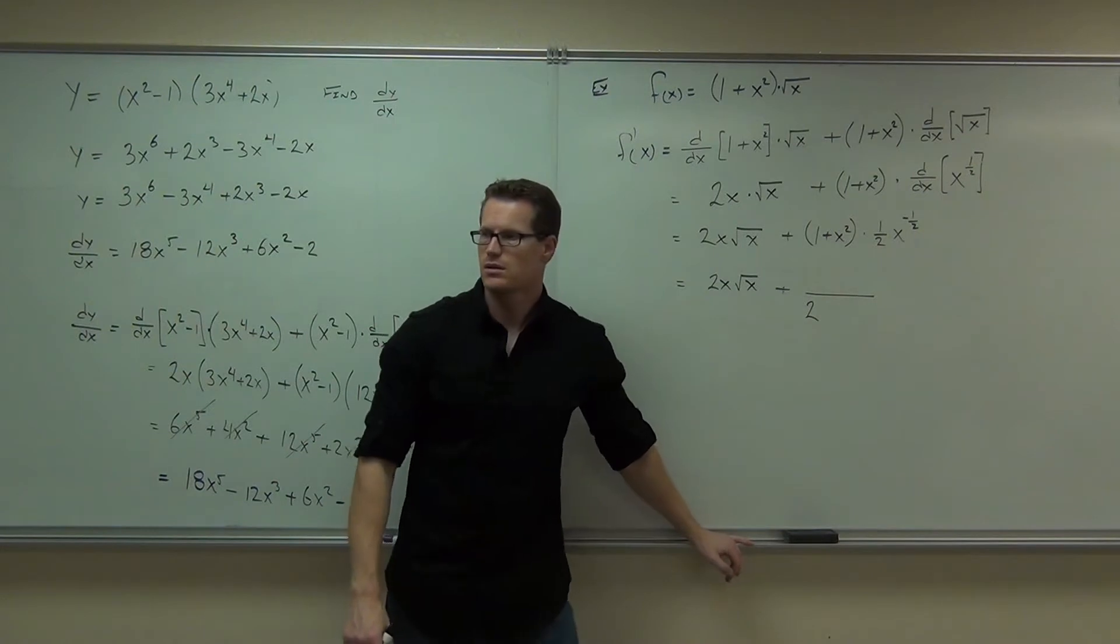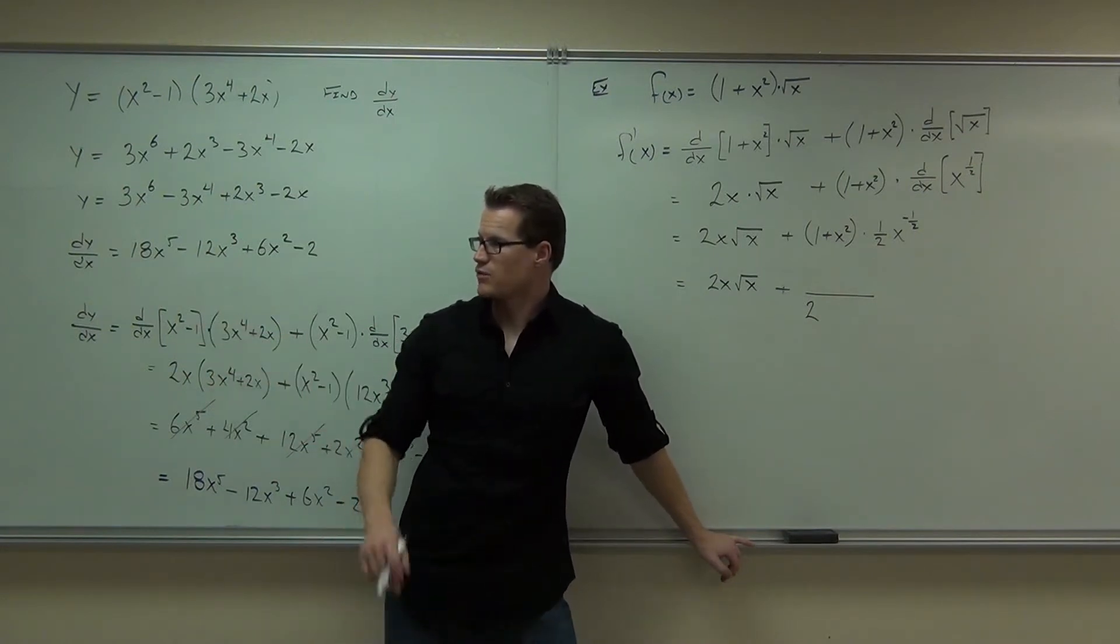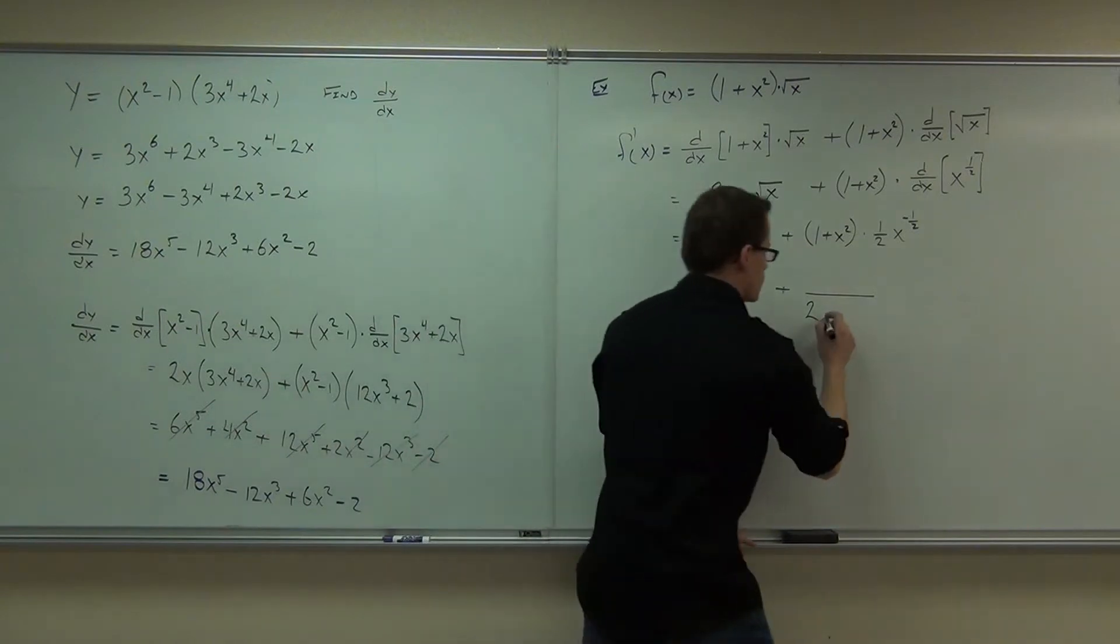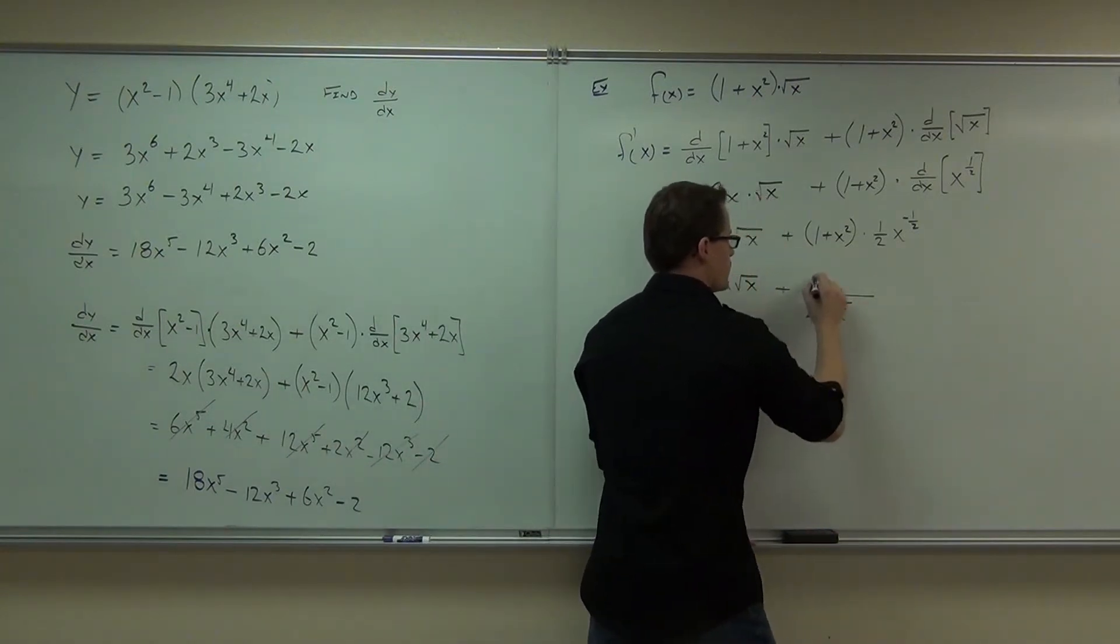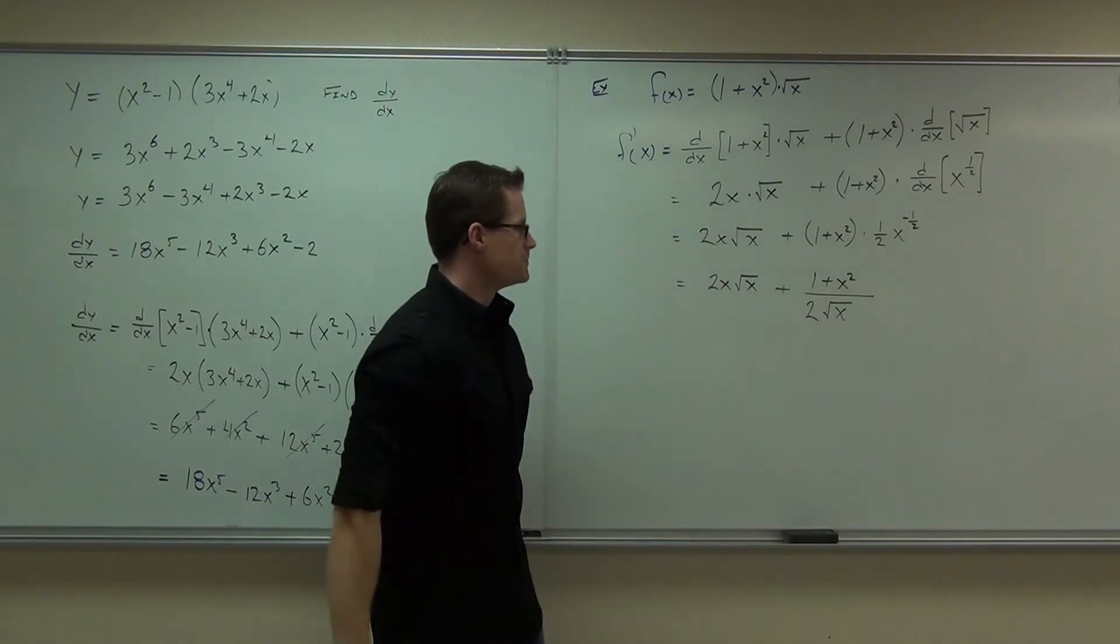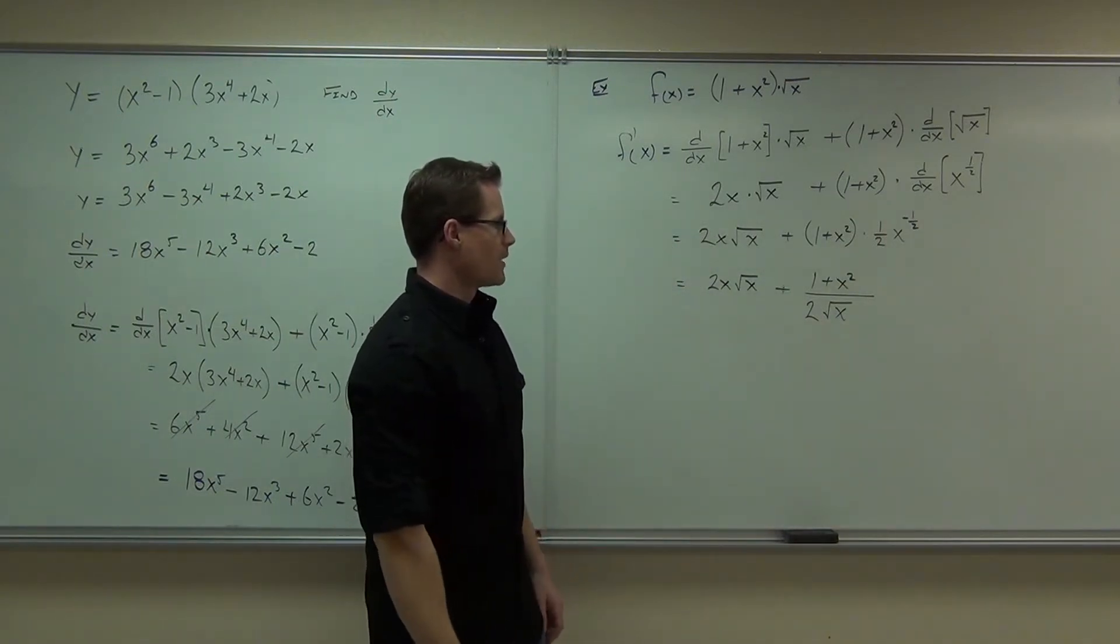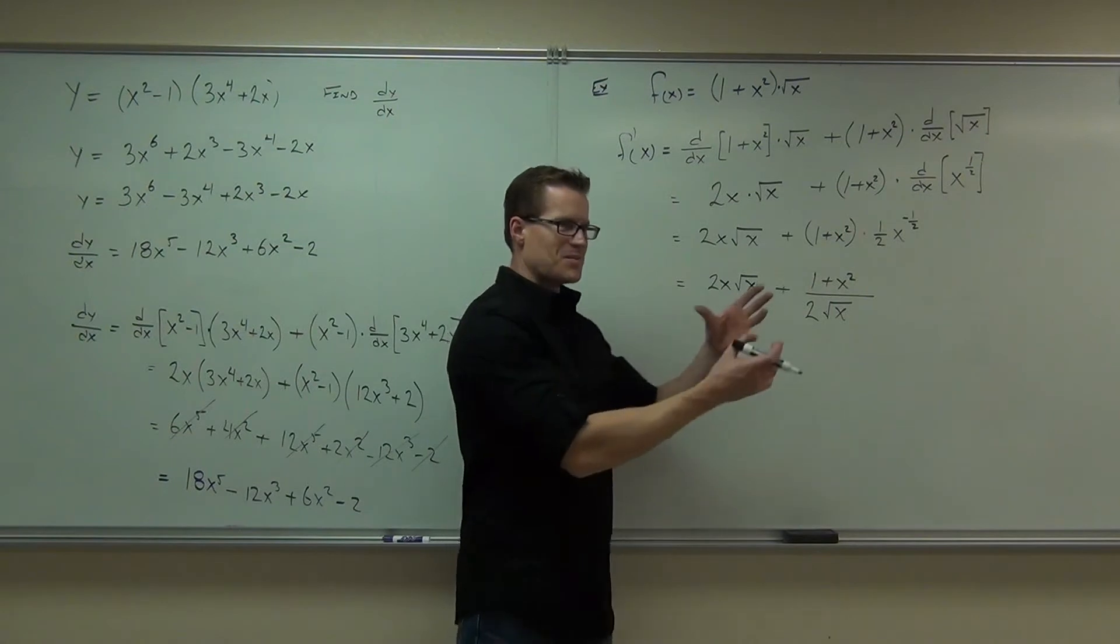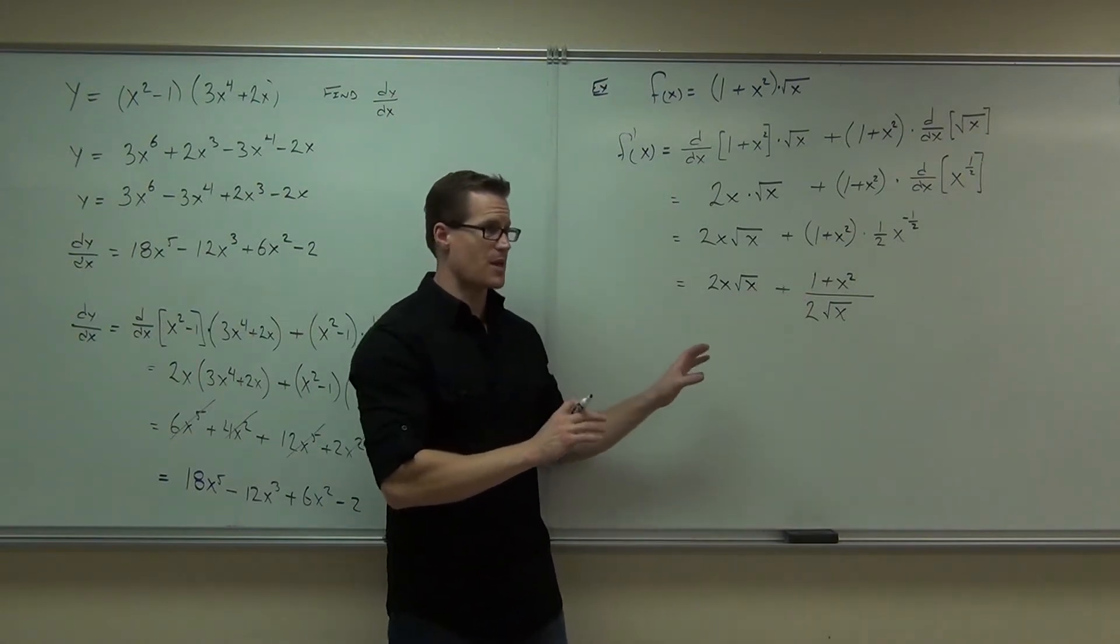What else? Root x, because x to the negative 1 half, that says denominator. And then 1 half says it's a square root. 1 plus x squared is on the numerator. Unless we want to get fancy and break that stuff up, find common denominators, we're just about done with that problem.